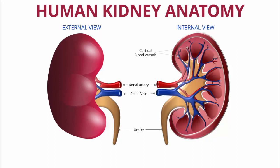This is the internal view. You can see the cortical blood vessels, interlobular blood vessels, minor calyx, major calyx, the medulla, and the capsule. There are many other parts which have not been included. As I said, this is free to use — you can edit it and use it in your classroom sessions.